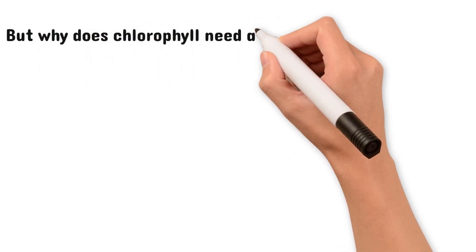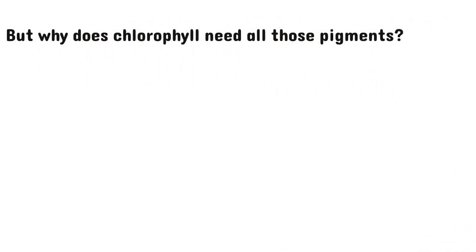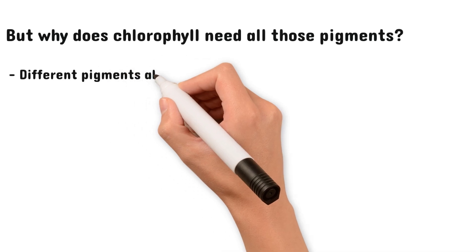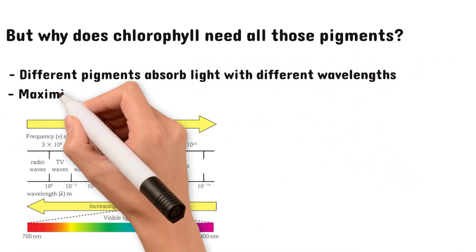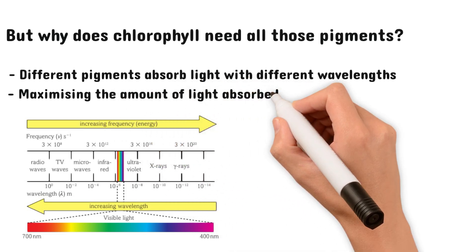But why does chlorophyll need all these pigments? Each pigment absorbs light from a different area of the light spectrum, so having a variety enables the plant to use most of the light falling on it.